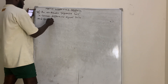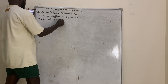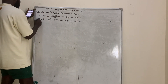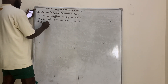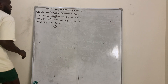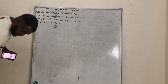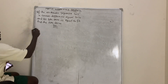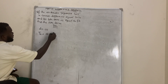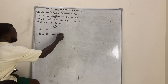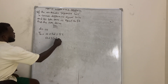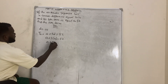Solution: they gave us d, the common difference, so d is equal to 10. The formula for t6 is a plus 5d, and they say it is equal to 52. So putting it in: a plus 5 times 10 is equal to 52, therefore a plus 50 is equal to 52.